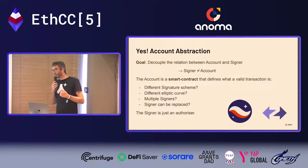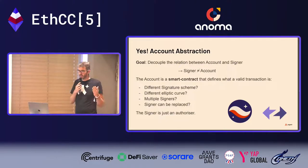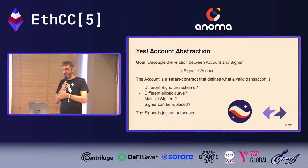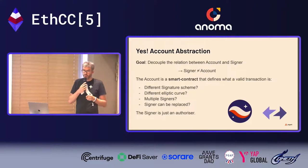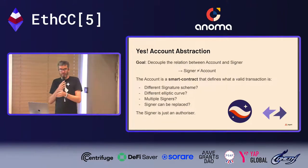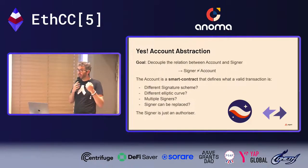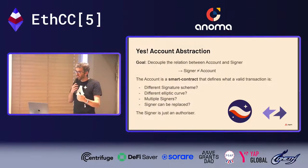We believe layer twos are an amazing opportunity to fix this problem. We've learned a lot from Ethereum over the past six years, and going to layer twos is the right moment to fix the things that should be improved. The solution is called account abstraction.